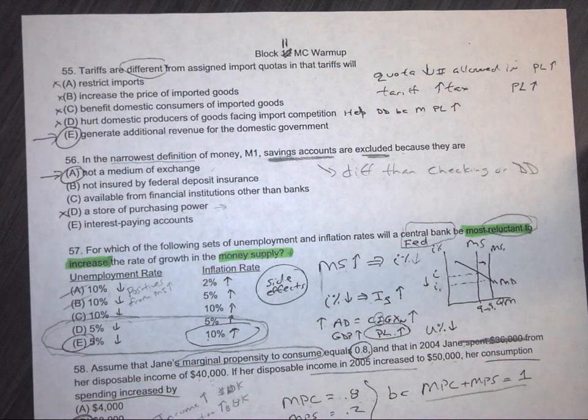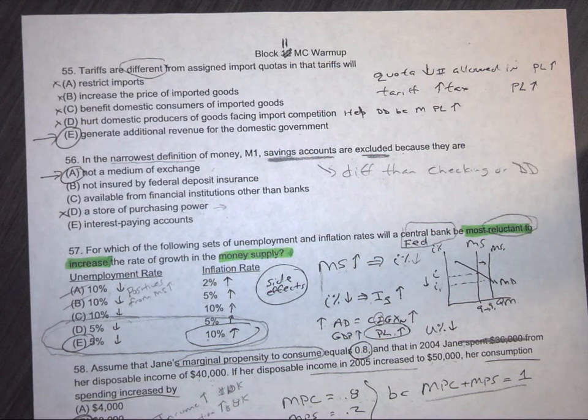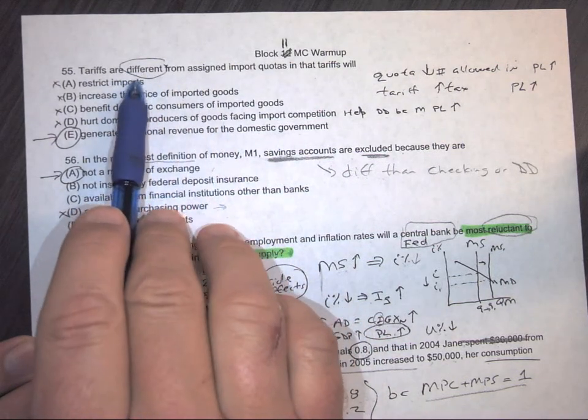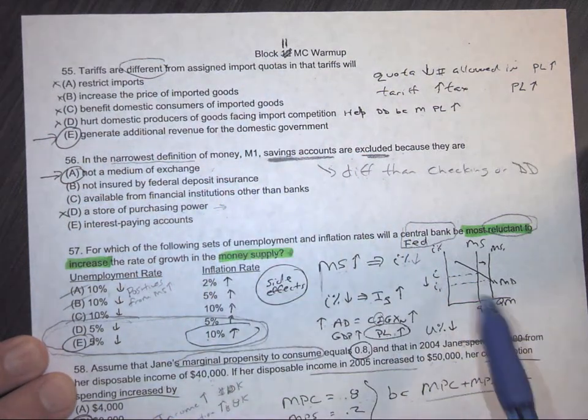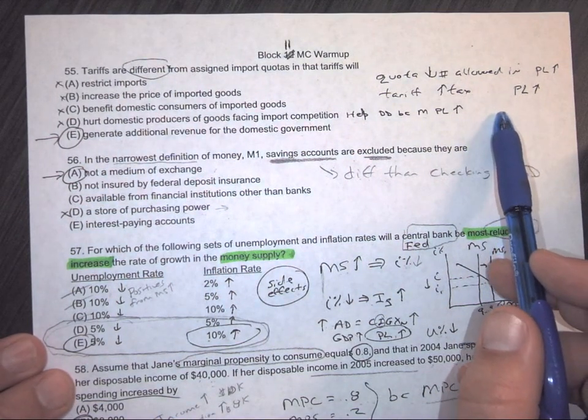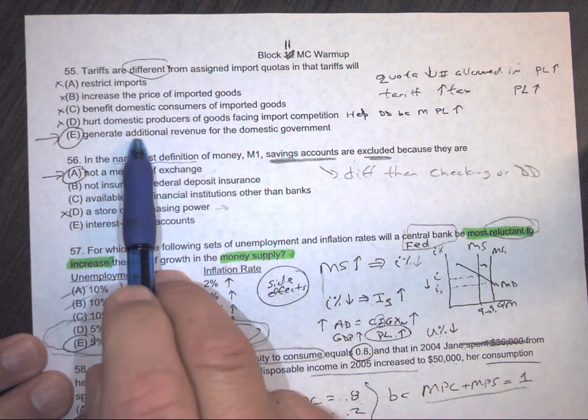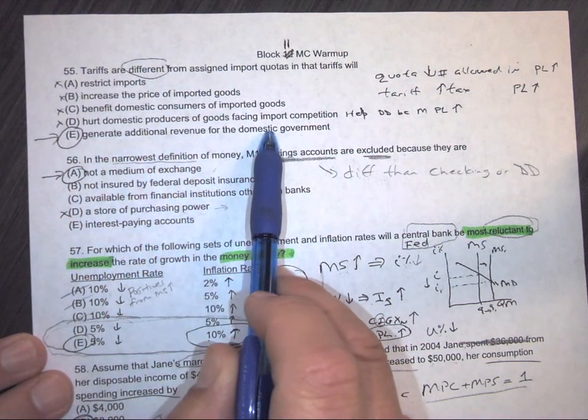Okay, number 55, tariffs are different from assigned import quotas in that tariffs will - remember the graphs we did on domestic supply, world supply, all that stuff. So tariffs are taxes, quotas are number of items that are allowed into the country or not. So tariffs make money, they generate revenue.